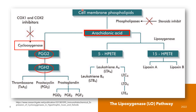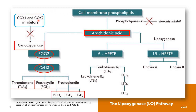PGH2 is then converted into eicosanoids such as prostaglandins PGD2, PGE2, and PGF2-alpha. Other prostanoids formed are thromboxane and prostacycline. The non-steroidal anti-inflammatory drugs, or NSAIDs, inhibit COX and therefore the synthesis of prostaglandins and other prostanoids. There are at least two COX isoforms, COX-1 and COX-2, both catalyzing the same reaction.